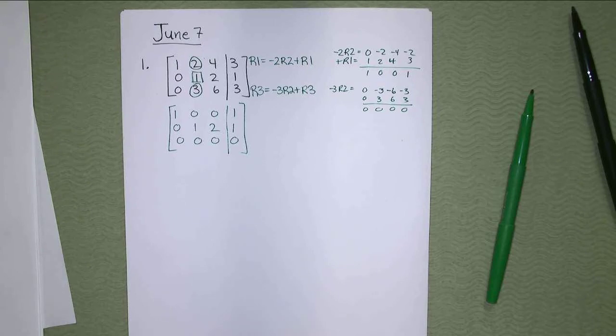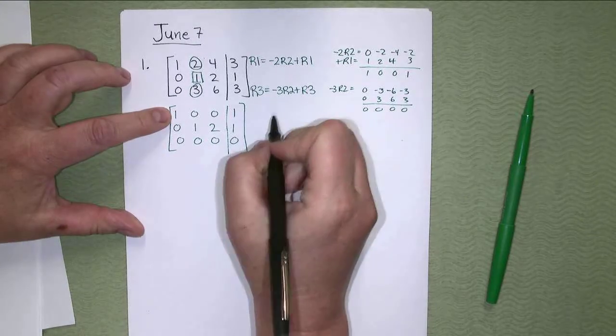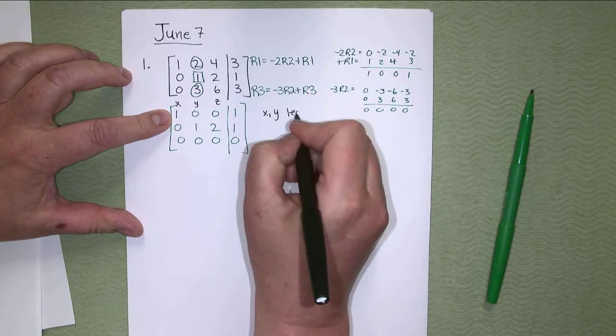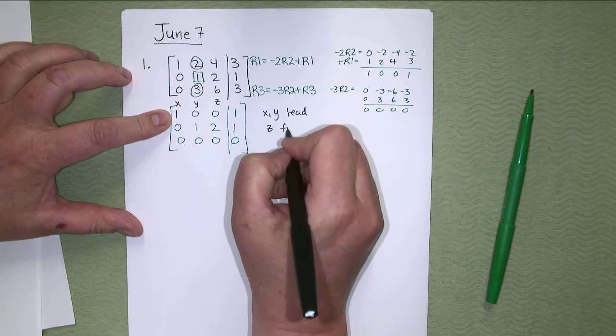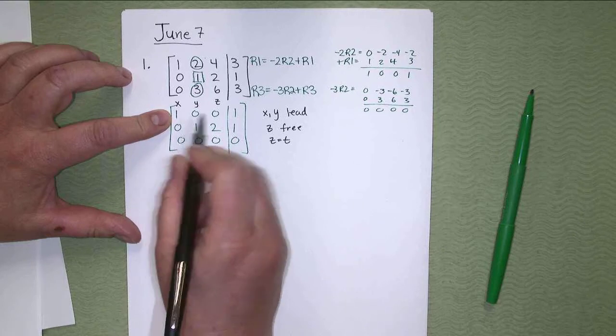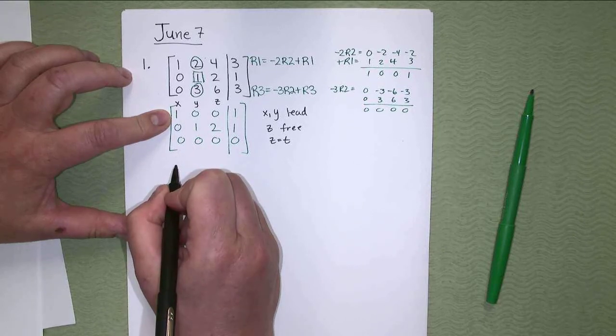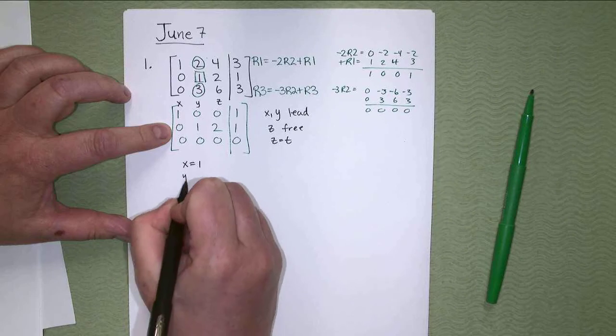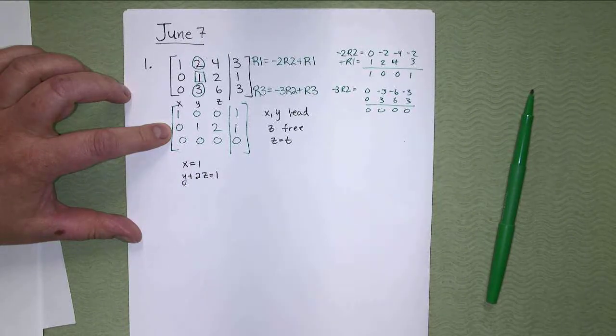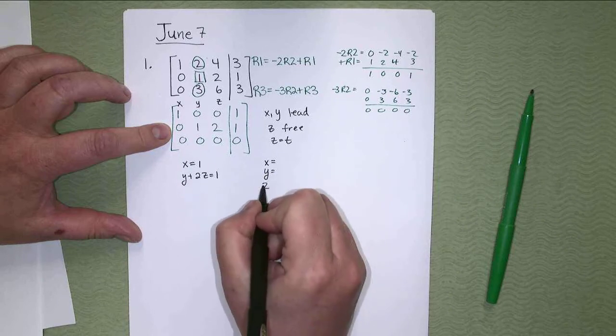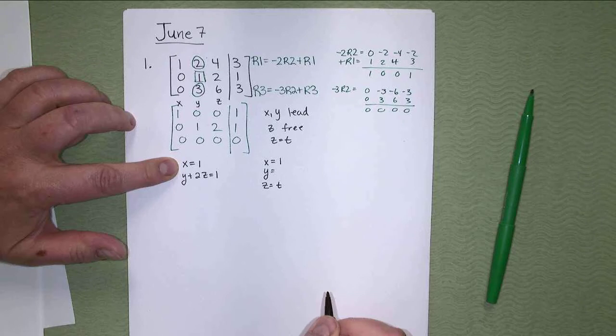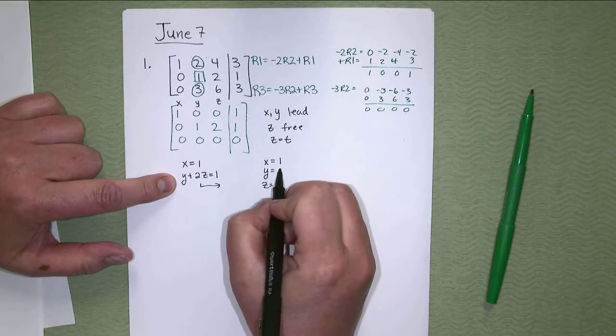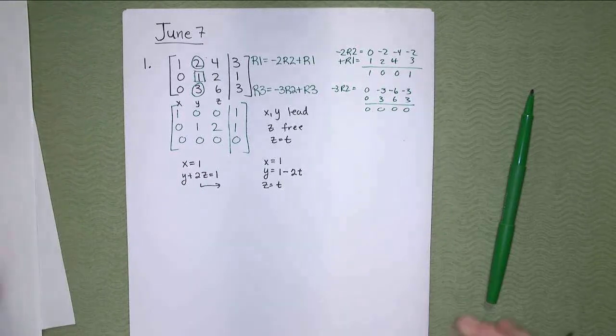You can't make a one, you're done. The two, this sometimes bothers people. They don't like that two there. But if there's no lead one under it, you don't worry about it. It's part of the infinitely many solutions. So let's write the solution. X and Y are the lead variables because they have a lead one. Z would be the free variable because it doesn't. So we're going to call Z equals T. In our first row, X equals 1. In the second row, we have Y plus 2Z equals 1.